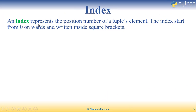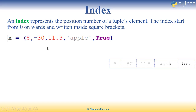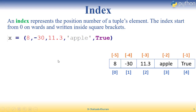Next topic is index. An index represents the position number of a tuple's elements. The index starts from zero onwards and is written inside square brackets. When we create a tuple, it will have indexing. It starts with 0, 1, 2, 3, 4 from left to right. And from right to left, it starts with minus 1, minus 2, minus 3, minus 4, minus 5.